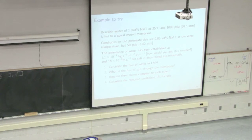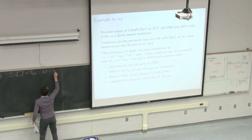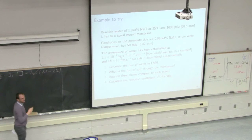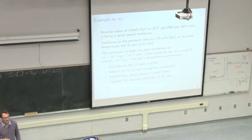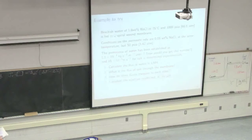The first goal is fairly obvious: calculate the flux of water in LMH. The plan is deceptively simple — we use J_V equals A_solvent times (delta P minus delta pi). We're given A_solvent as 1.1×10⁻⁴. We have enough information for delta P, and we have what we need for delta pi. The only part needing a little extra work is delta pi, since delta pi equals pi_feed minus pi_permeate.